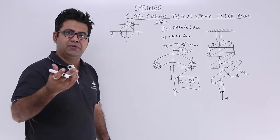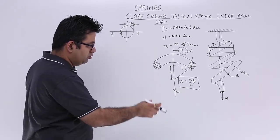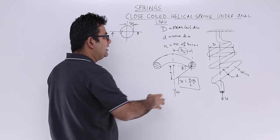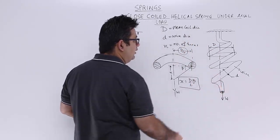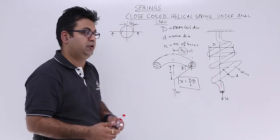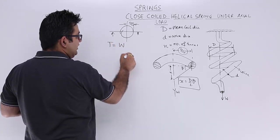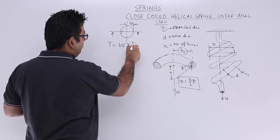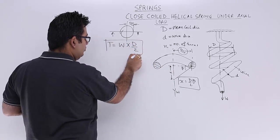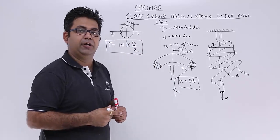So what happens when you pull it? So this entire coil, it kind of twists. There is a torque being produced. So that torque that is being produced is load into mean coil diameter by 2.